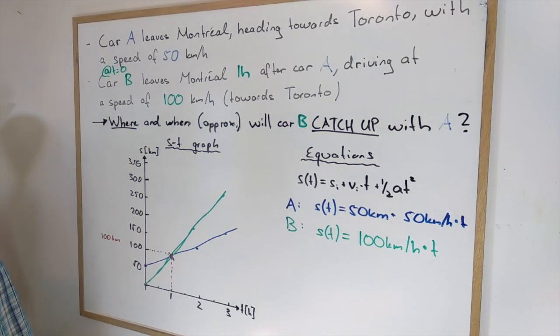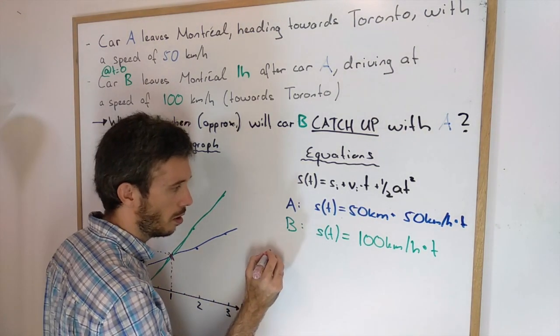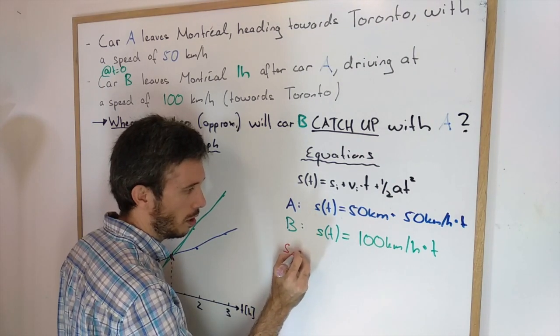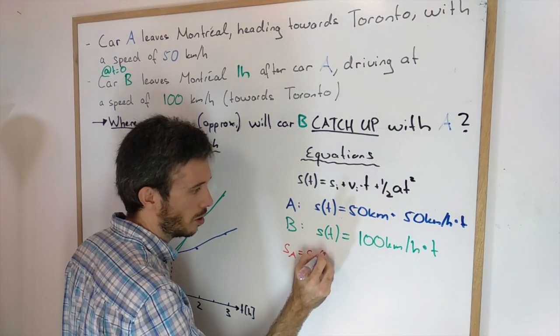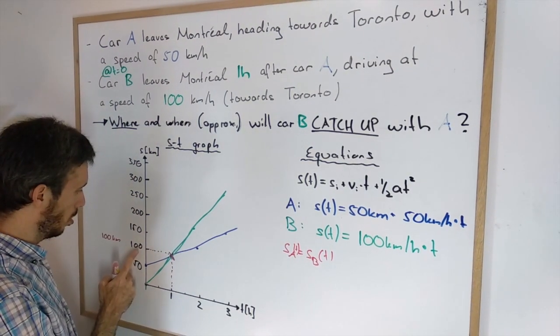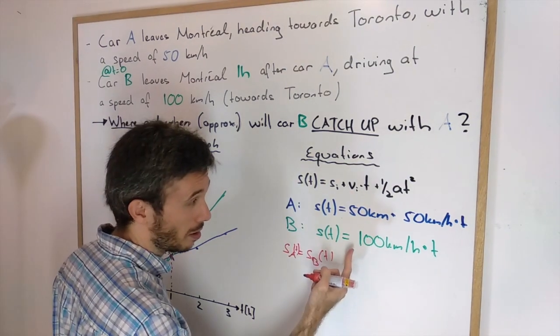And now what we have to do to find when and where they meet, we simply do S_A equals S_B as a function of time. They have to be at the same position, and define at what time are they at the same position.